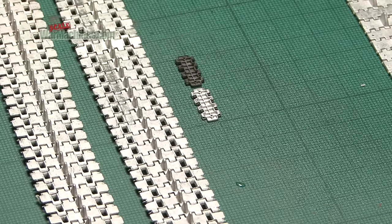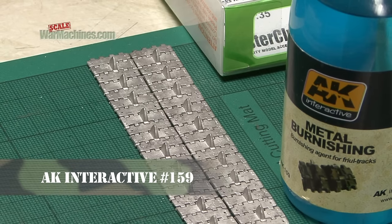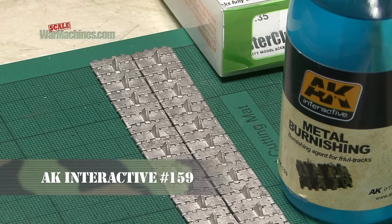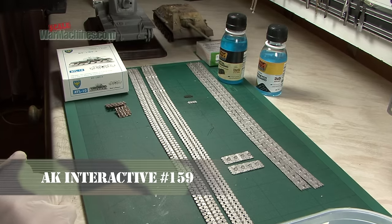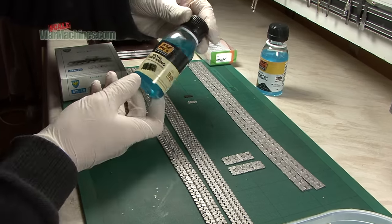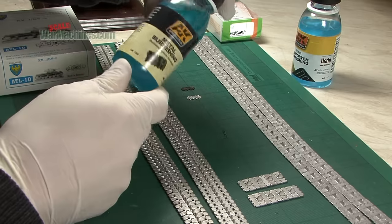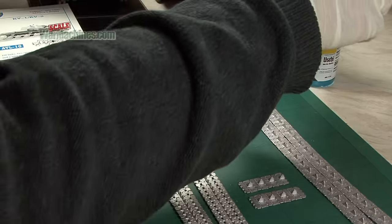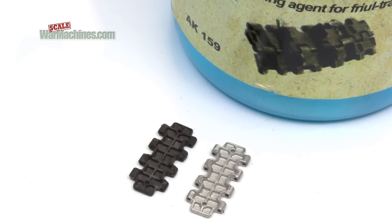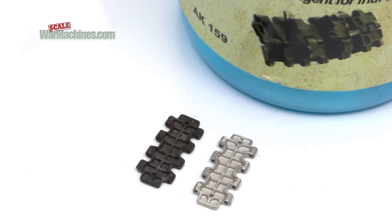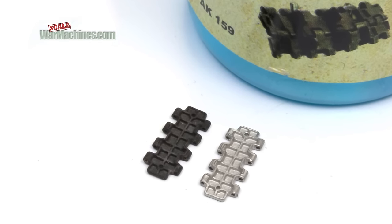We'll be using AK Interactive's metal burnishing solution, reference AK 159. This specially formulated chemical product allows you to age and weather the metal tracks. The longer they're exposed to it, the darker and rustier the metal's surface will become, thanks to the chemical reaction.